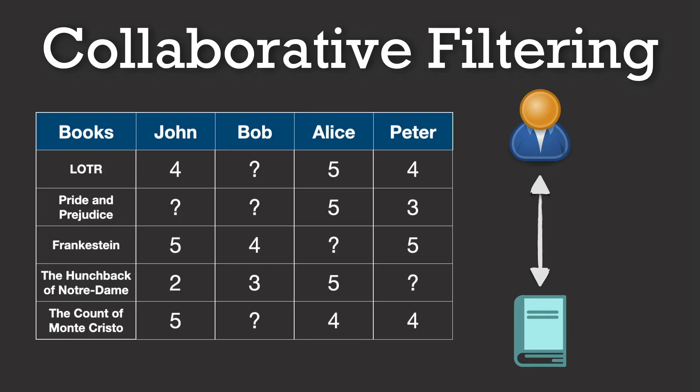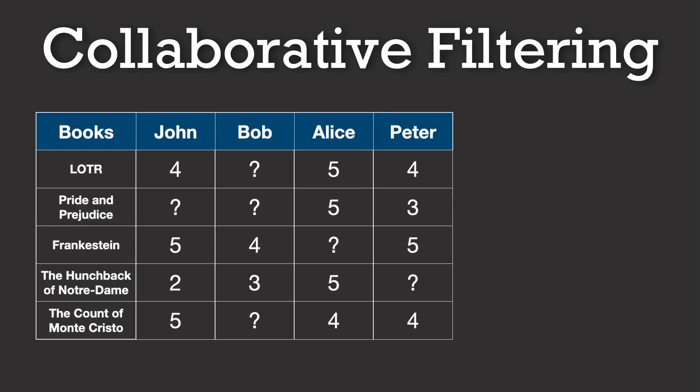Thus, by analyzing the patterns in our user-book-rating matrix, we can infer hidden or latent factors that capture the underlying relationships between users and items, allowing us to predict how a user might rate a book they haven't encountered yet.